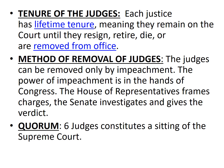Next, we will discuss the tenure, method of removal, and quorum for the Supreme Court judges. The judges have a lifetime tenure, which means that once appointed, they remain in office until they resign, retire, or are removed from office. The method through which they can be removed is only on grounds of violating the Constitution, through a process referred to as impeachment. The organ that performs this task is the Congress — the House of Representatives frames the charges, and it is the Senate which acts as the investigative agency and gives the verdict. Lastly, at least a minimum of six judges are required to constitute a sitting of the Supreme Court.